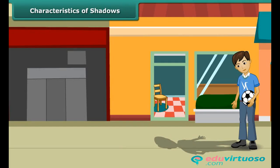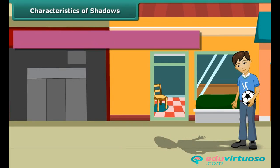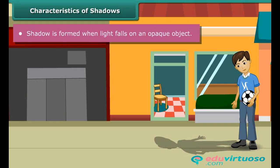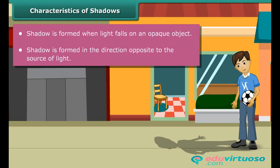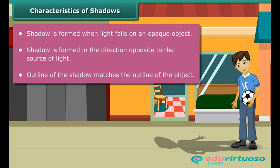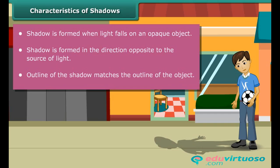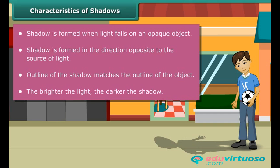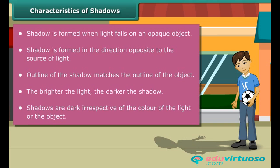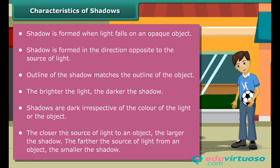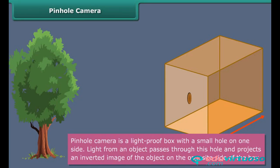Let us list the important characteristics of shadows. A shadow is formed when light falls on an opaque object. A shadow is formed in the direction opposite to the source of light. The outline of the shadow matches the outline of the object. The brighter the light, the darker the shadow. Shadows are dark irrespective of the color of the light or the object. The closer the source of light to an object, the larger the shadow; the farther the source, the smaller the shadow.